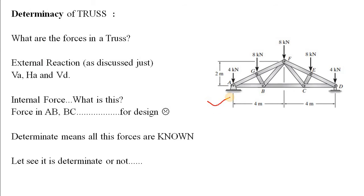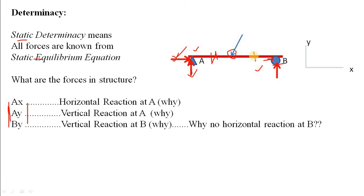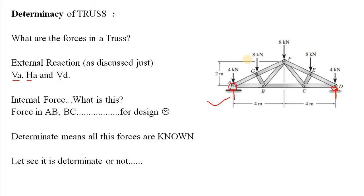Now, going to the truss: we must determine whether this truss is determinate, and if so, whether it is externally determinate only or internally determinate as well. For a truss, the external forces are the support reactions — vertical and horizontal for a pin joint, and only vertical for a roller. The internal forces in a truss consist only of axial forces; there is no bending moment or shear force.